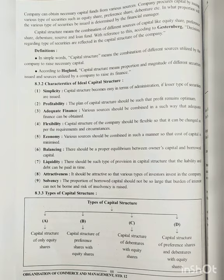Ninth is solvency — the proportion of borrowed capital should not be so large that the burden of interest cannot be managed and the risk of insolvency is raised. Our company's interest obligations should not exceed what we can bear given the capital and risk involved.